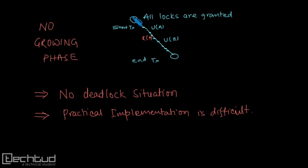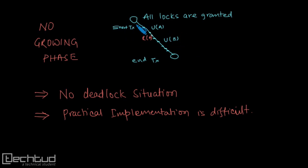However, the practical implementation is basically difficult. This is because before you start the transaction, you have to acquire all the locks, which means you have to estimate all the data which is going to be used in the transaction. This early prediction makes it difficult to implement.